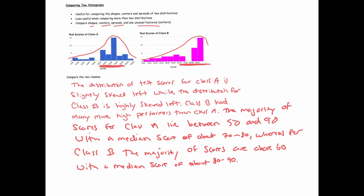All right. So we've touched on the shape skewness. We've touched on the spread. The spread I used a kind of vague term. I didn't use the range. I just sort of said that the majority of scores lie between 50 and 90 and 70 and 80. That'll suffice for spread. I've talked about the medians. So I've talked about the centers.